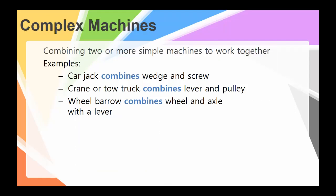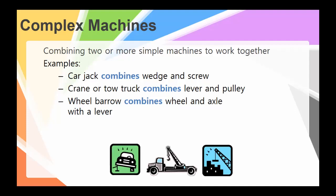So something like a car jack, which combines a wedge and a screw, we're putting it underneath the car, and we're using a screw to raise it so that we can get a gap. A crane or tow truck combines a lever and a pulley, pulley system so we can get it up, but there's also a lever so we can pull on it as well. Wheelbarrow combines a wheel and axle with a lever. So these are all great examples that we can use to help us better understand how we use complex and simple machines in our daily lives.